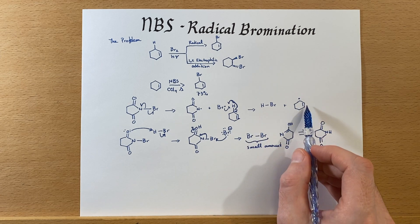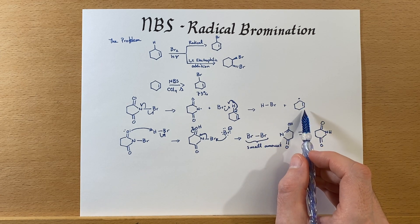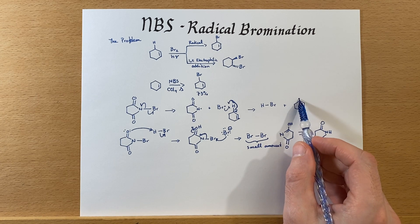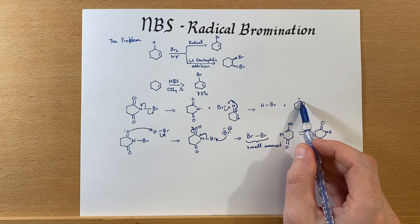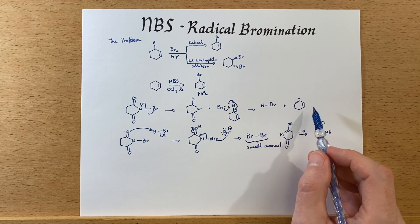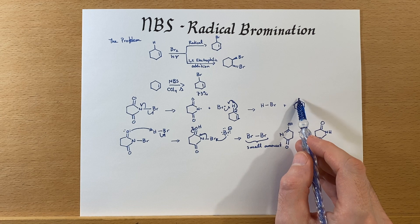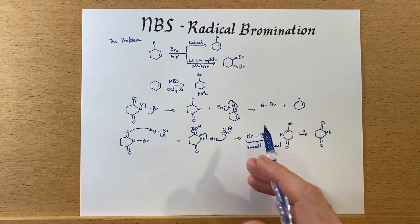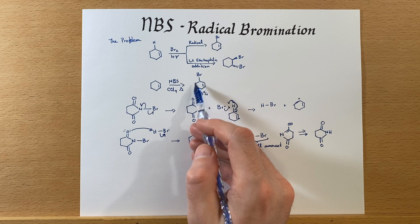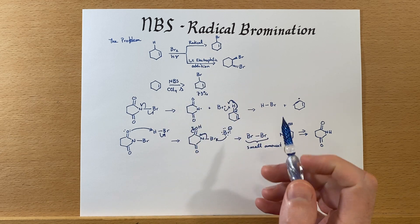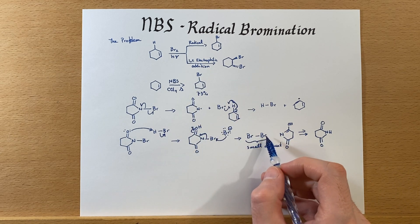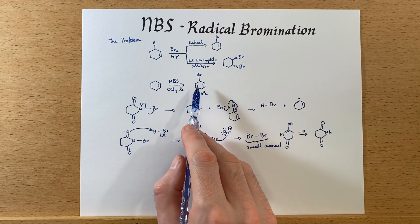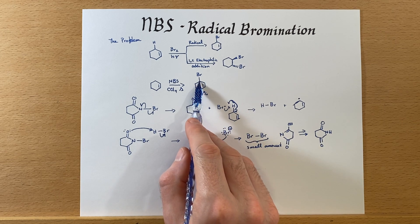Now we generate this alkyl radical — because the radical is on that carbon — and this can react with our bromine, which will generate another bromine radical and generate product.